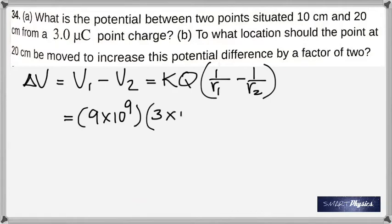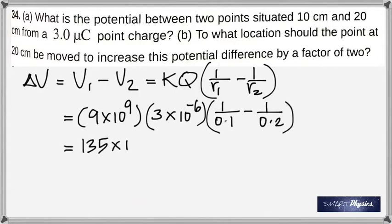This is what you have inside. k is 9 times 10 to the 9, q is in micro so it's 10 to the negative 6. You see centimeters - no it will not work. That's 0.1 meter, and then that is 0.2. That comes out to be 135 times 10 to the 3 volts.